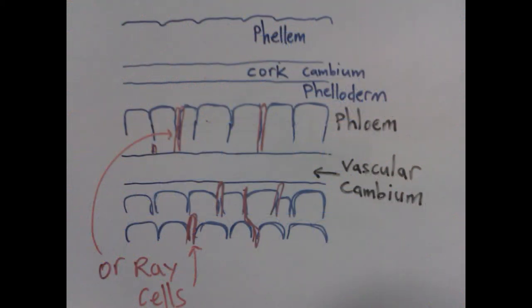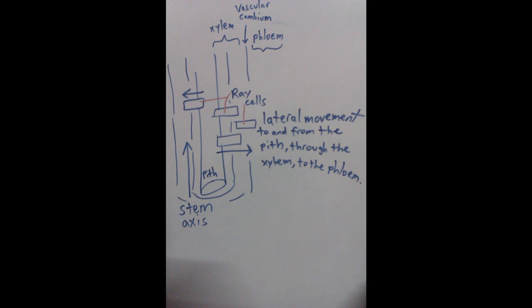The vascular cambium also produces ray cells which help the lateral transport of materials. Ray cells are oriented perpendicular to the stem axis and divide the stem into sections. They can also be described as being perpendicular to the annual growth rings. These radial extensions of cells are also known as medullary rays, pith rays, or wood rays.